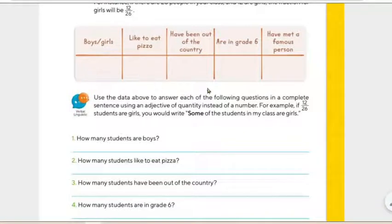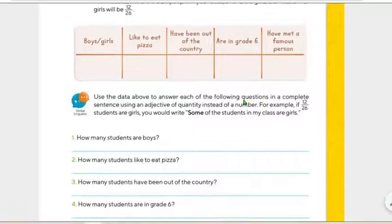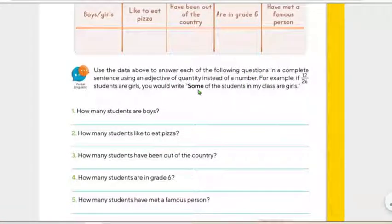Now that we have this, because in the morning, you know, we were in the class and we answered it, use the data above to answer each of the following questions in a complete sentence using an adjective of quantity instead of a number. For example, if 12/26 students are girls, you will write some of the students in my class are girls. Entonces, aquí que vamos a responder las preguntas basándote en la información que pusiste en esta tabla, ¿cierto?